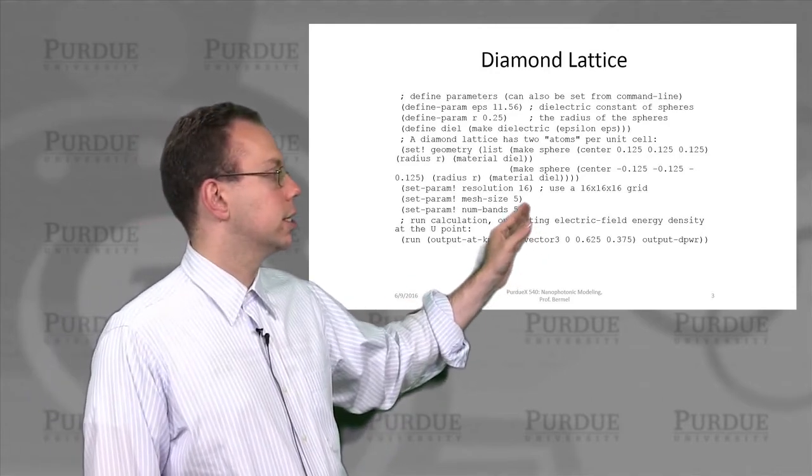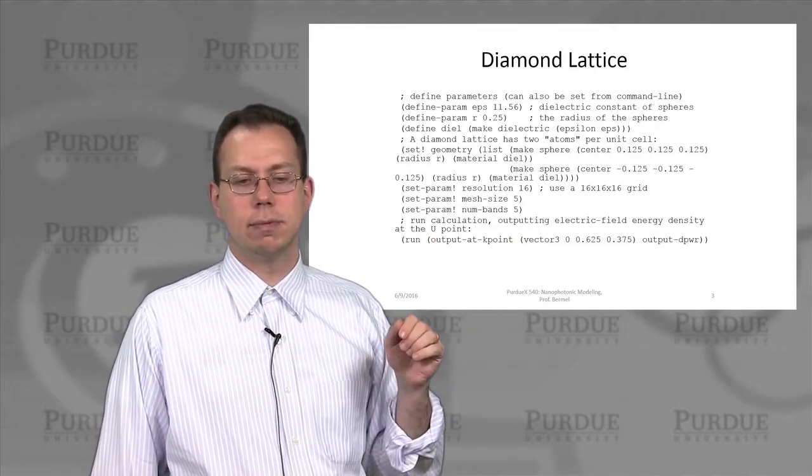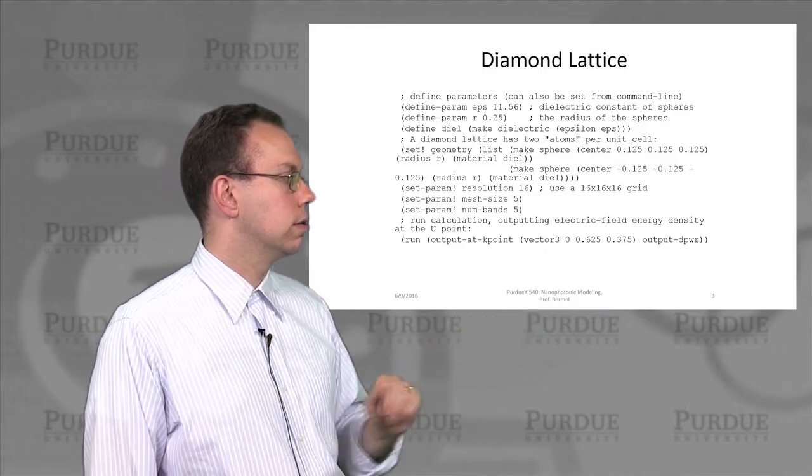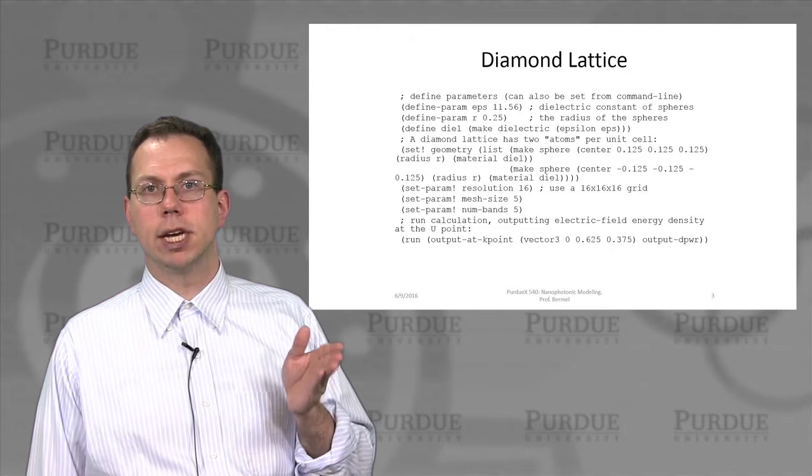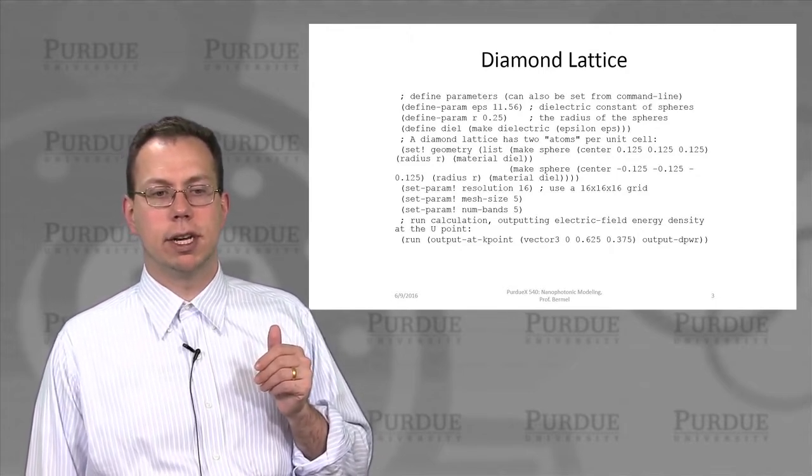And we have a mesh size of about 5 bands to reduce the computational load. And then we can actually run the calculation using the run function. And now we don't use run TE or run TM because it's a true 3D calculation. So TE and TM modes are not well defined.